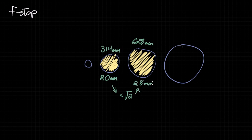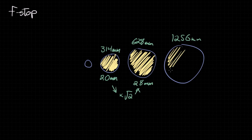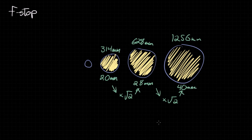Multiplying the diameter by the square root of 2 will end up doubling the area of the aperture. So if we want to go up to the next aperture size, we double the area again, because this lets in double the amount of light as the previous aperture size. So in order to double the area, we take the diameter and multiply it by the square root of 2, giving us a diameter of 40 millimeters. Every time we multiply the diameter by the square root of 2, we're doubling the amount of light. Conversely, if we divide the diameter by the square root of 2, we get half the amount of light.